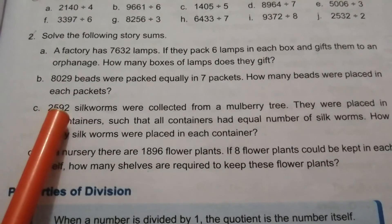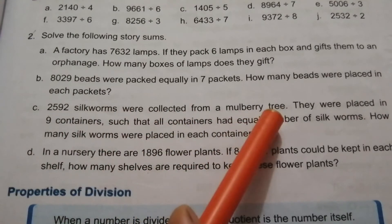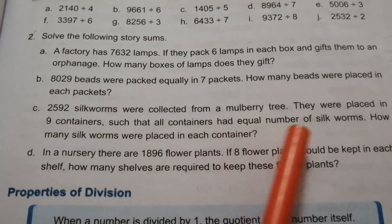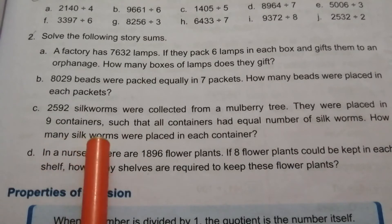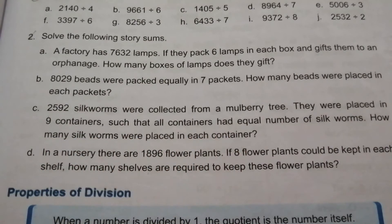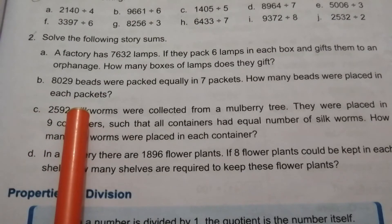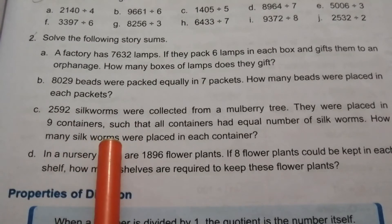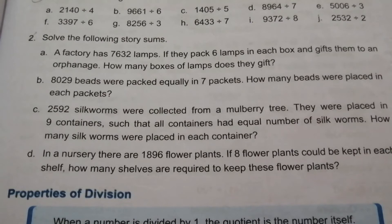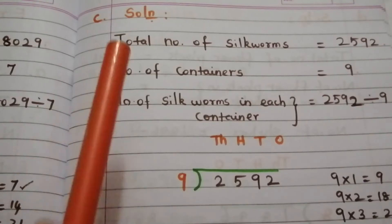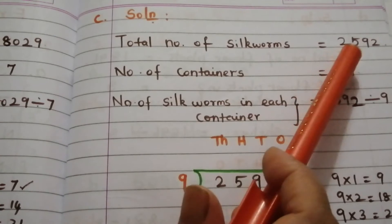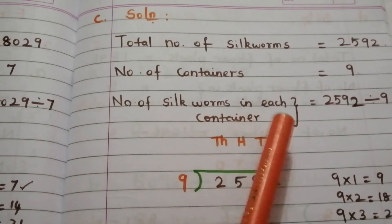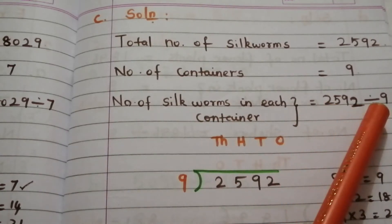Problem C: 2592 silkworms were collected from a mulberry tree. They were placed in 9 containers such that all containers had equal number of silkworms. How many silkworms were placed in each container? Total number of silkworms is 2592 and number of containers is 9. Number of silkworms in each container equals 2592 divided by 9.